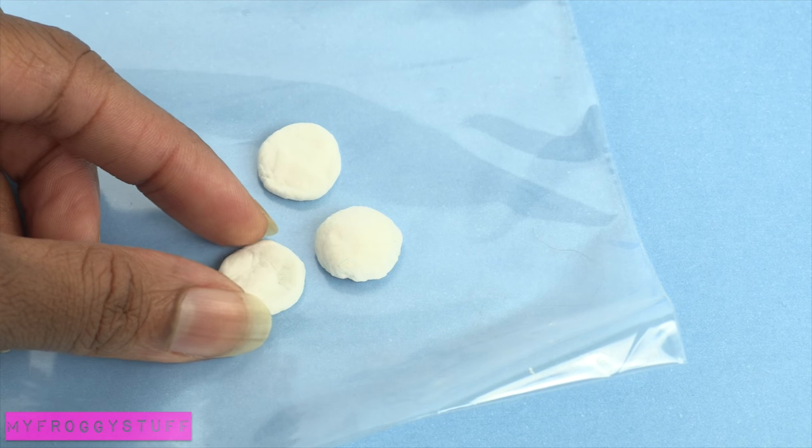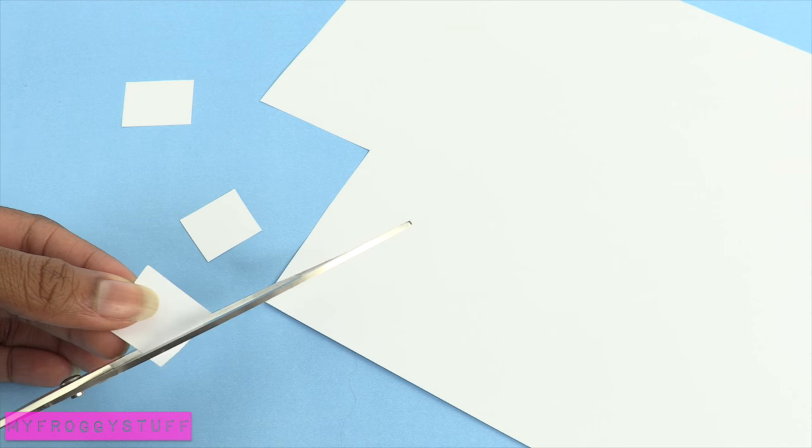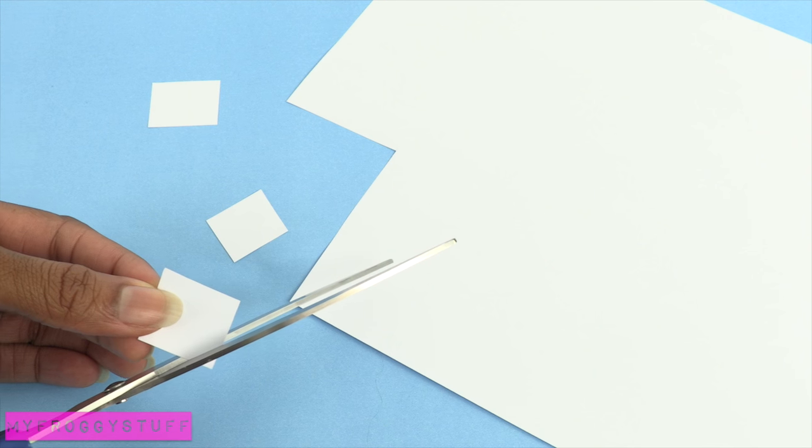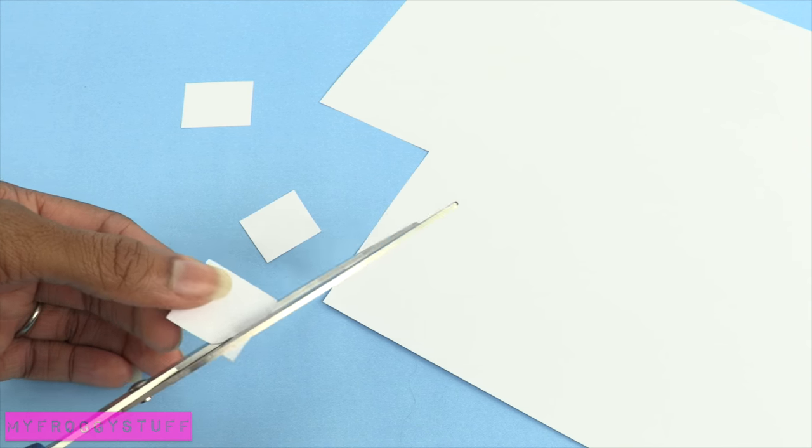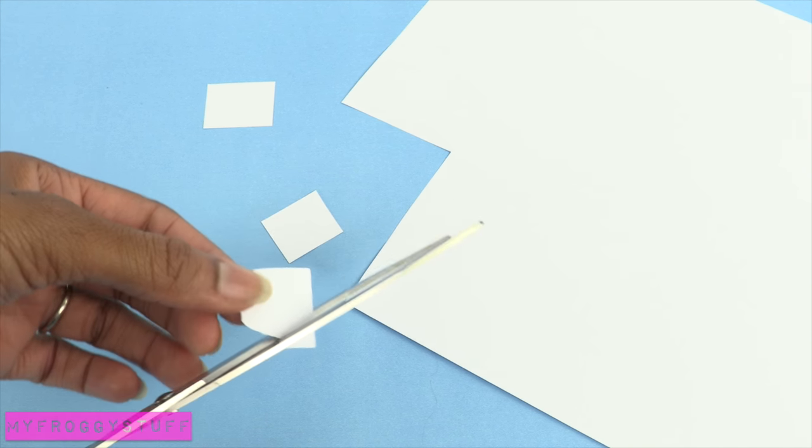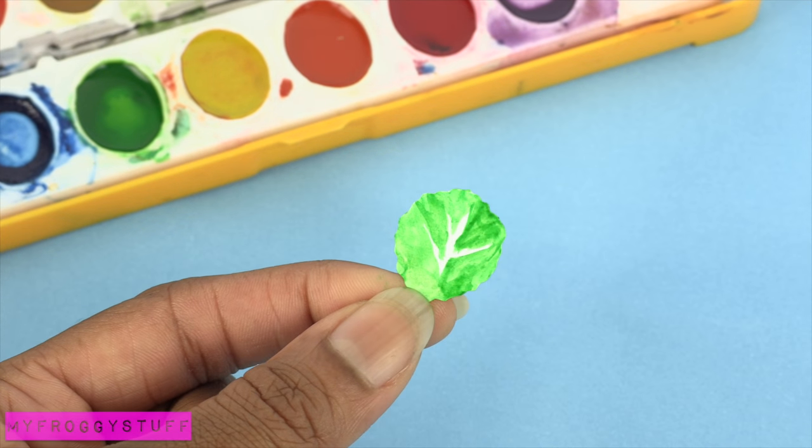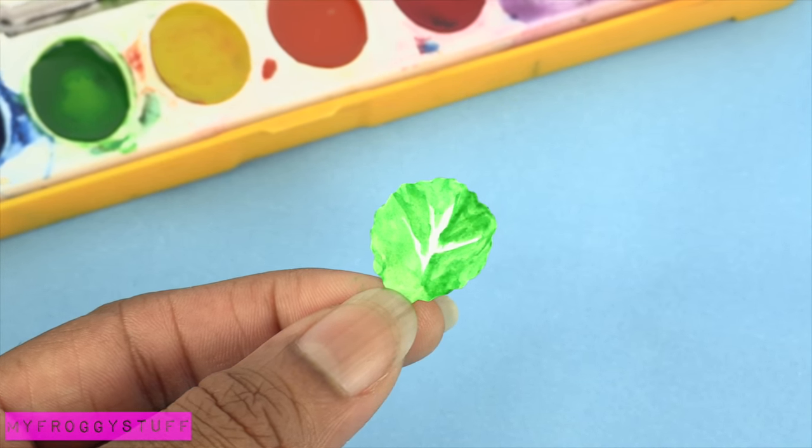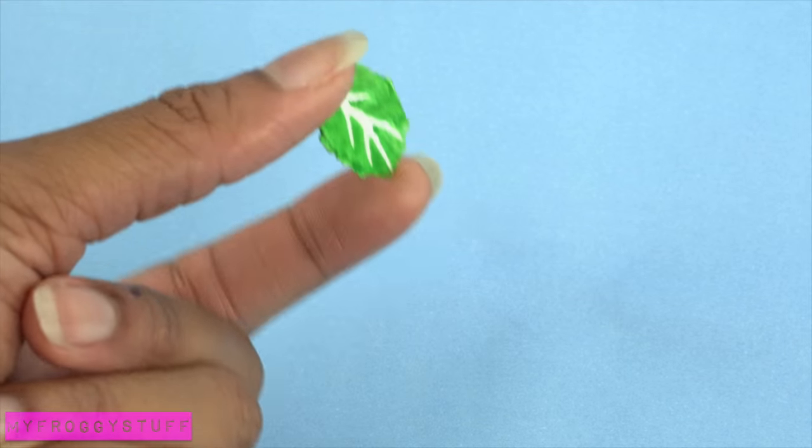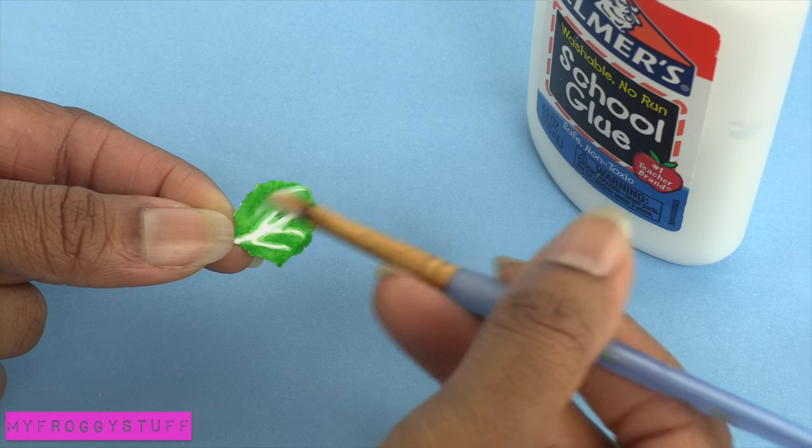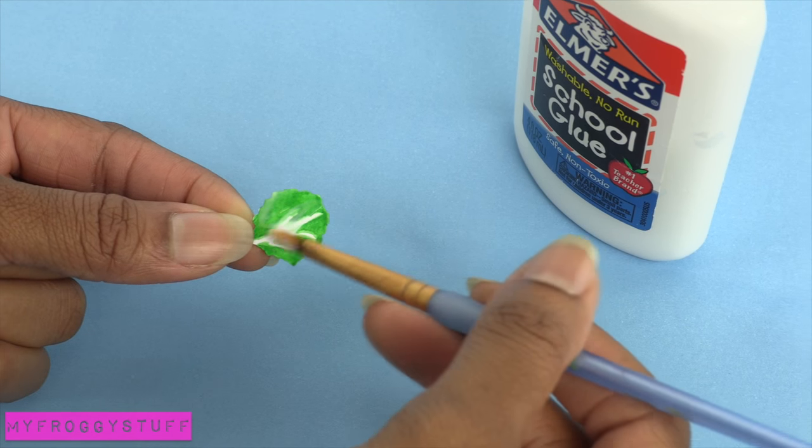Make another one for the patty and allow it to dry. To make lettuce, we cut small squares of paper, then cut a jagged shape on the inside. Paint it with watercolors, leaving some white for the veins in the leaf. Paint both sides and allow it to dry. Gently brush it with a layer of glue to seal it.